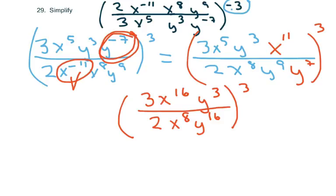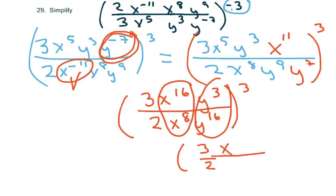Now I'm going to use the quotient property and simplify these two. So I'm going to get 3 halves, and there's 16 x's on the top and 8 on the bottom. So that's just going to leave 8 on the top. And for this piece, there's 3 y's on the top and 16 on the bottom. So that's just going to leave 13 on the bottom, on the denominator.